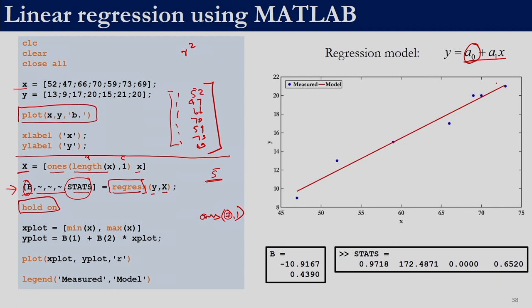To draw a straight line we only need two points. For x₁ we use the minimum value of x and for x₂ we use the maximum value of x, so the line spans the full range of data. Once x₁ and x₂ are decided, we calculate y₁ and y₂ using the model coefficients stored in b.